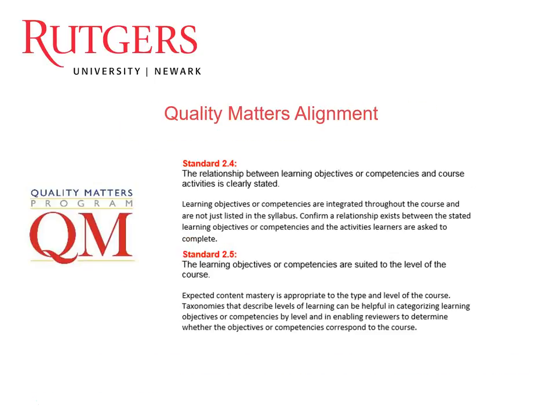The important part is that all of these align. In Quality Matters, alignment is a high priority. You have your overall course learning objectives, then your individual module learning objectives need to align and speak to those course learning objectives. And then all of your assessments and assignments need to demonstrate that they are going to help the student master those learning objectives.